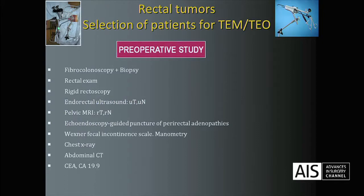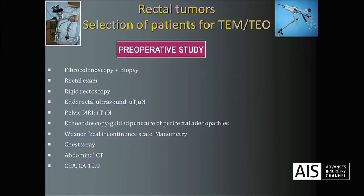This is the protocol of preparative study we use in all patients who can be candidates for this kind of surgery. We perform fibrocolonoscopy and multiple biopsy, rectal exam, rigid rectoscopy, and rectal ultrasound to know the T and N staging, pelvic MRI, echoendoscopy, fine-needle puncture of pre-rectal adenopathies only in cases of suspected pathological nodes, Western and fecal incontinence scale, and manometry only when it scores more than six points. Additionally, abdominal CT and tumor markers CA and CA 19.9 are performed. Above all, pelvic MRI and rectal ultrasound are the most important tools to determine T and N staging.